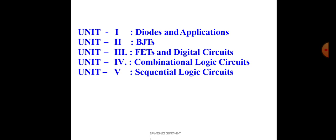Combinational circuits include multiplexers, demultiplexers, encoders, decoders, and comparators. Sequential logic circuits include flip-flops, registers, memories, and counters. These all come under sequential circuits. So first, let us look at Unit 1 — Diode and Applications.